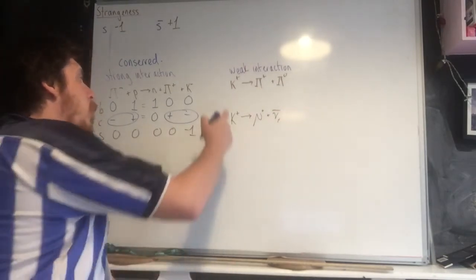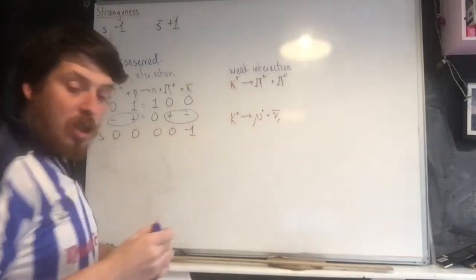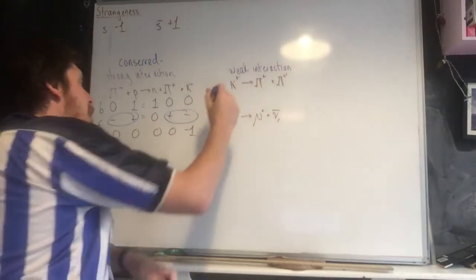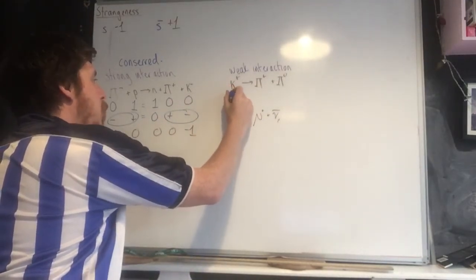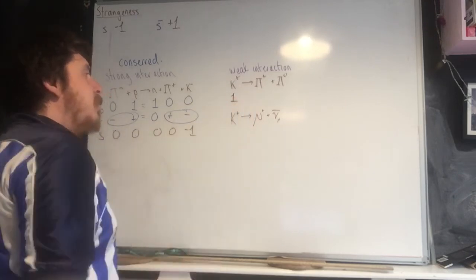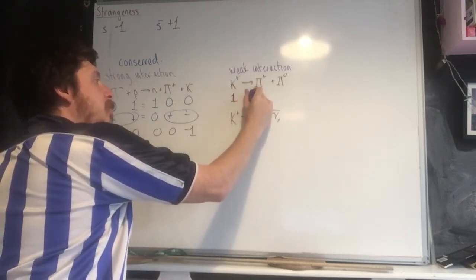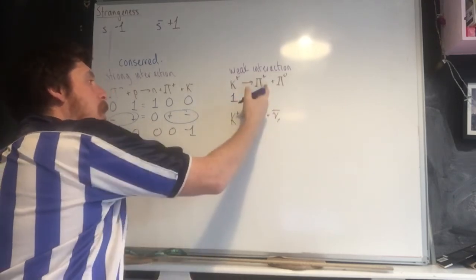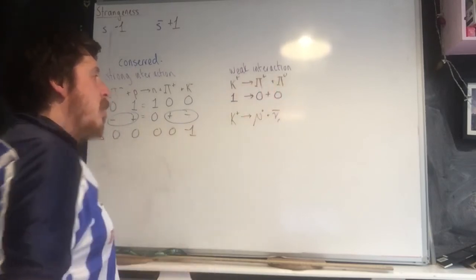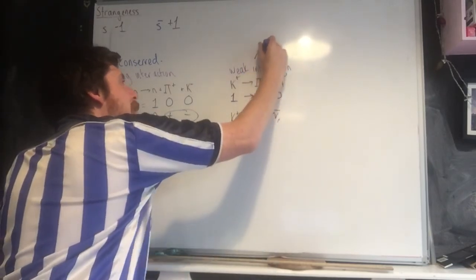In this example, we have strangeness of plus one here. Then we have no strangeness, and no strangeness. However, it's a weak interaction.